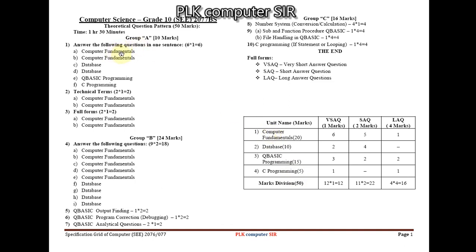Breaking down Computer Fundamentals: from Group A there are 6 very short answer questions (1 mark each) and the full forms/technical terms questions, plus 5 short answer questions in Group B, and 4 marks for number system — totaling 20 marks. For Database: 2 very short answer questions and 4 short answer questions = 10 marks.